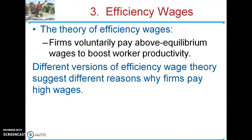Firms pay efficiency wages on their own — not because they're forced to — usually to reduce worker turnover, attract higher-quality workers, and get healthier workers who can afford better nutrition. Workers also stay on task more because they know losing the job means earning less elsewhere. Efficiency increases, profitability increases, but it creates some unemployment. So the three causes of structural unemployment are unions, minimum wage, and efficiency wages — all three keep wages above equilibrium and contribute to structural unemployment, which contributes to the natural rate.